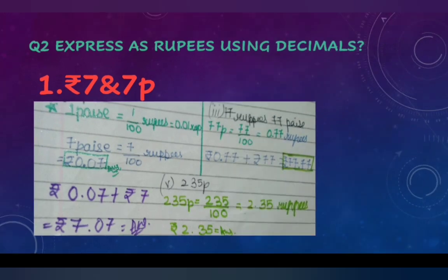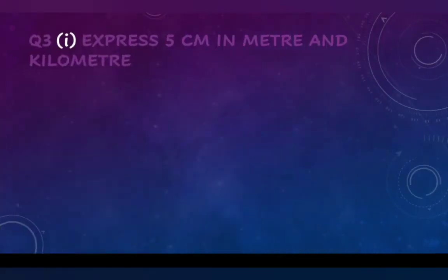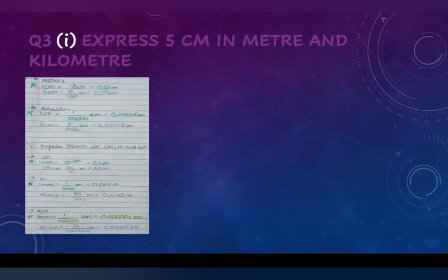The next question is to express 5 cm in meters and kilometers. If we convert 5 cm to meters, we get 0.05 meters. This is because 1 meter equals 1/100, so 5 cm equals 5/100, which gives 0.05 meters.